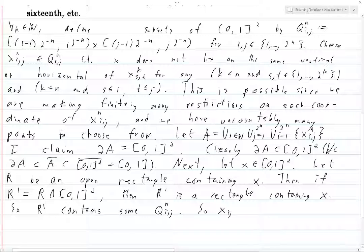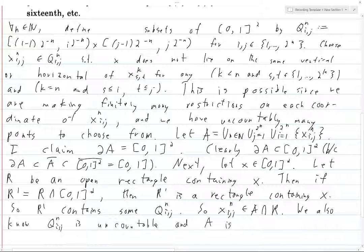So x_{i,j}^n is in A and it's in R. We also know Q_{i,j}^n is uncountable, and A is just a countable union of singleton sets, so it's countable.